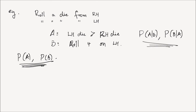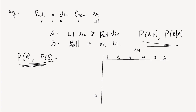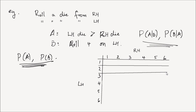To find those probabilities, I'm going to start listing the elements in the sample space. The right-hand die could be one, two, three, four, five, or six. Also, the left-hand die could take values of one, two, three, four, five, or six. Bear with me while I draw this table.